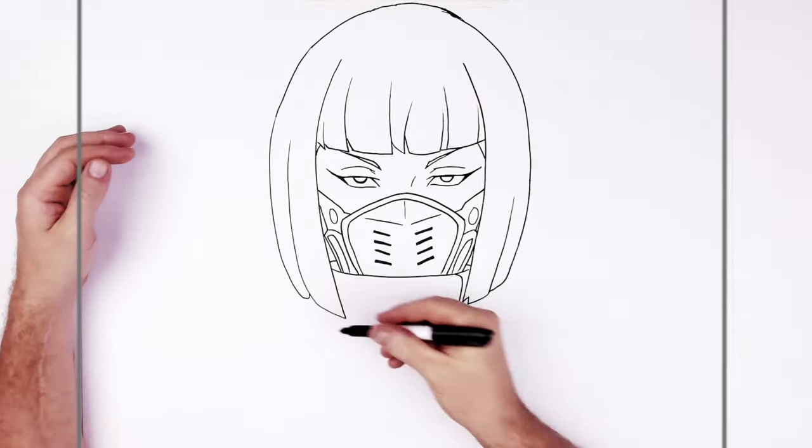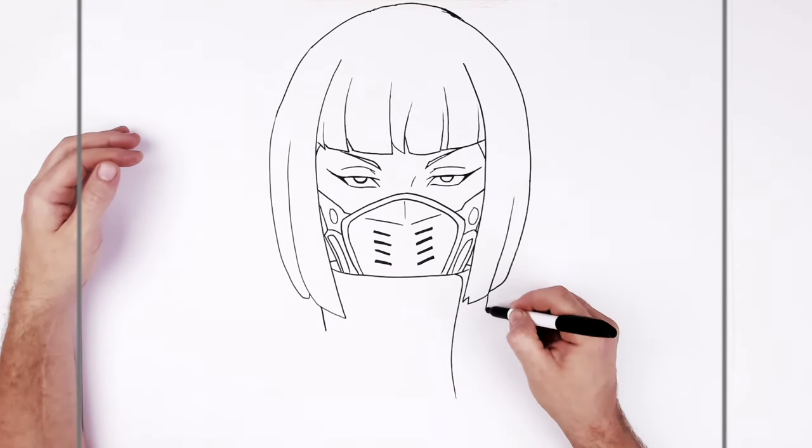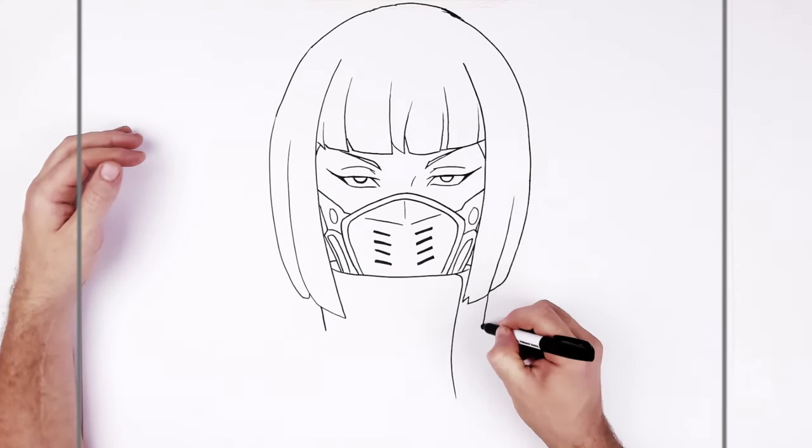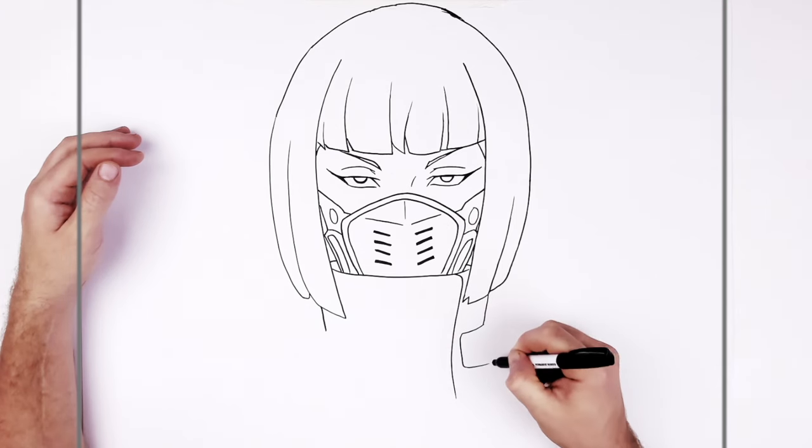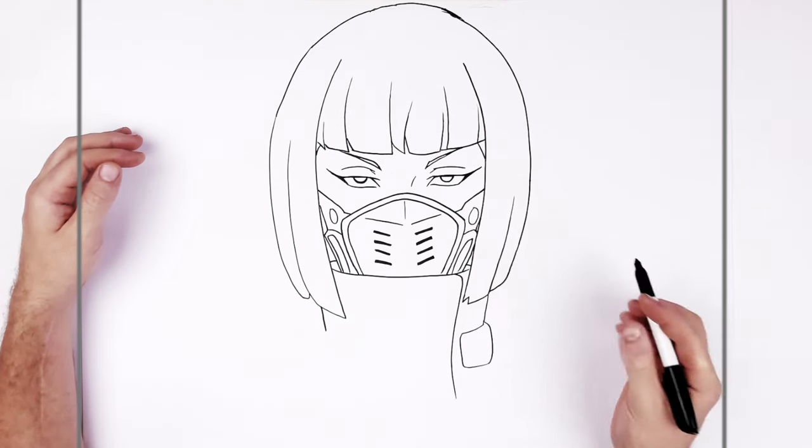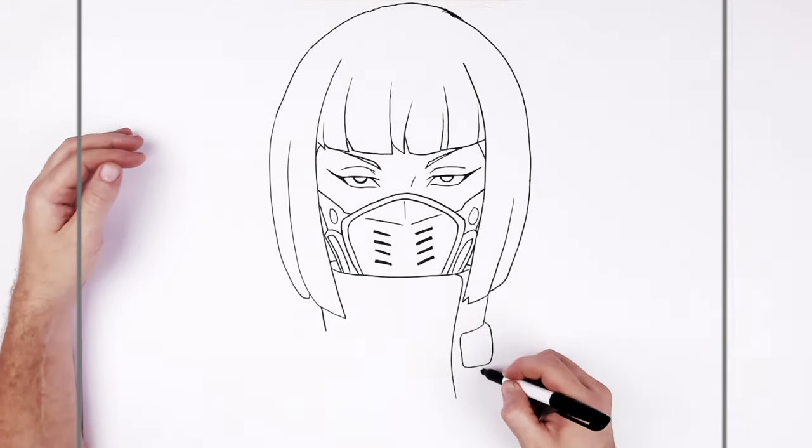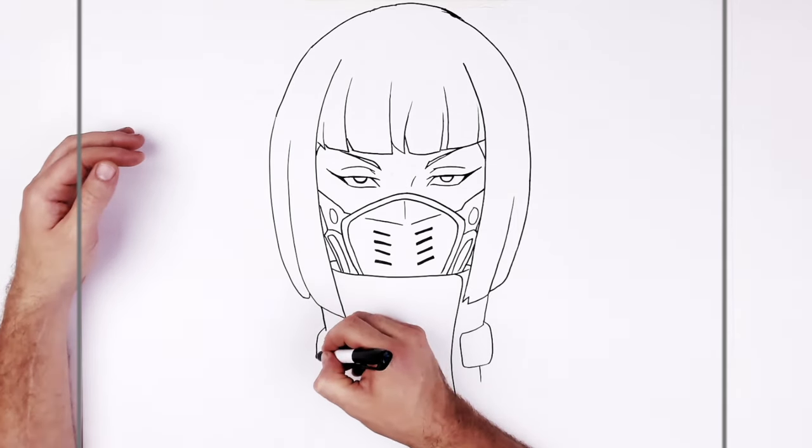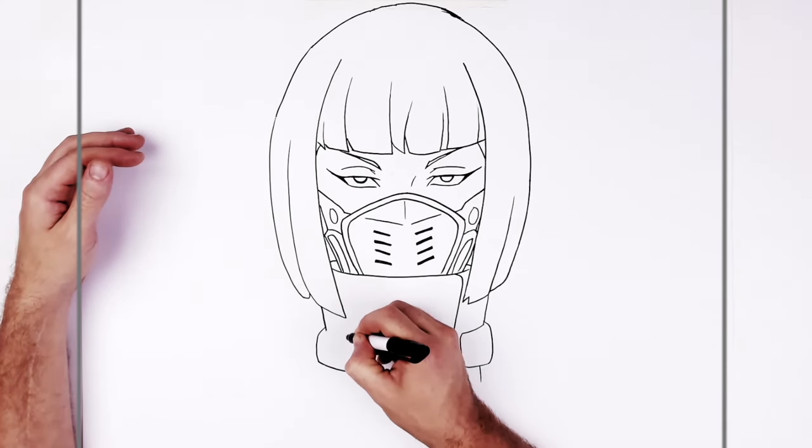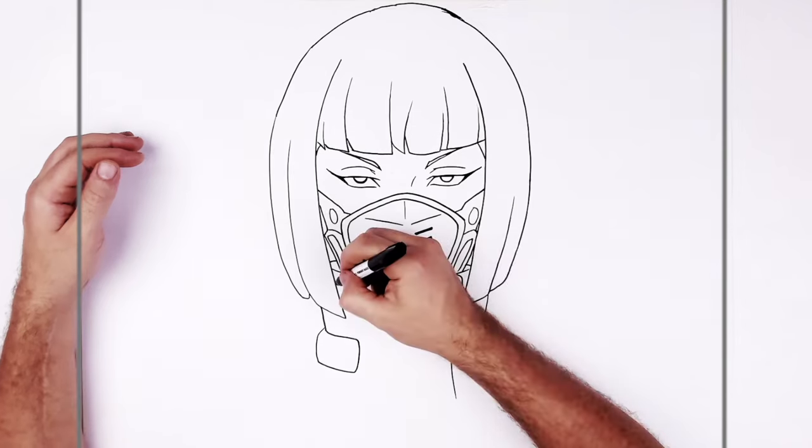So rest of her collar comes out the side here, and she's got what looks like buckles on the side down there. Buckles or belts or something there. And then this has a rim.